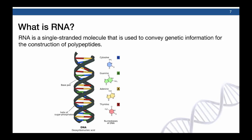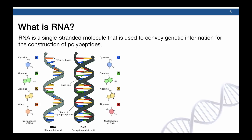We know that DNA is a double-stranded molecule that has four nucleotide bases: cytosine, guanine, adenine, and thymine. A single DNA molecule has two strands, oftentimes referred to as anti-parallel because they run in opposite directions. Furthermore, the bases exhibit a characteristic called complementarity, such that adenine always binds with thymine and cytosine always binds with guanine.